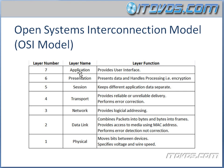Let's start with layer seven, the application layer. This is going to provide your user interface. We're going to take a look at what protocols function at each layer in a bit.